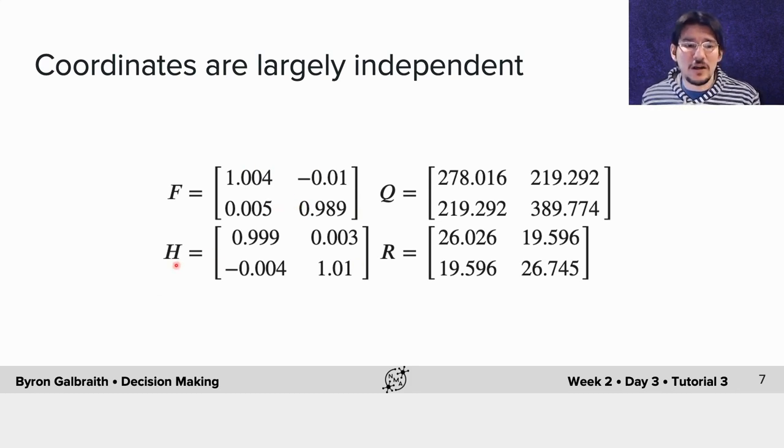The same thing for our H, our state to observed transition as well. The way we can interpret that is that these coordinates are largely independent—the current coordinate has very little dependence of x on y, and vice versa, both on the state transition as well as on the observed representation.